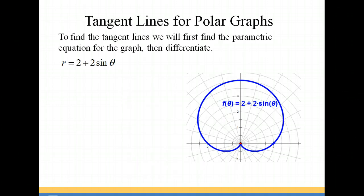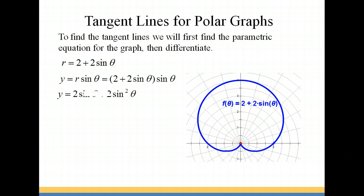In order to find the tangent lines, we must differentiate in parametric form. So we're going to rewrite our polar equation. R is given by 2 plus 2 sine theta, and y is equal to r times sine theta, so that means it's 2 plus 2 sine theta all times sine theta. We're going to distribute the sine, so we have 2 sine theta plus 2 sine squared theta.